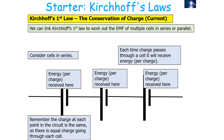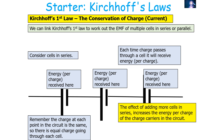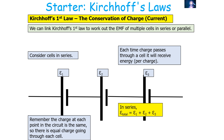Each time your charge carriers move through a cell they will receive some energy per charge due to moving through that cell. This tells us that the effect of adding more cells in series will increase the energy of the charge carriers in the circuit. Since energy per charge is the EMF, adding more cells in series increases the total EMF. In series, the total EMF equals EMF₁ plus EMF₂ plus EMF₃.